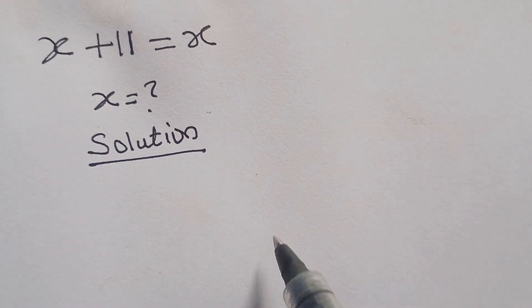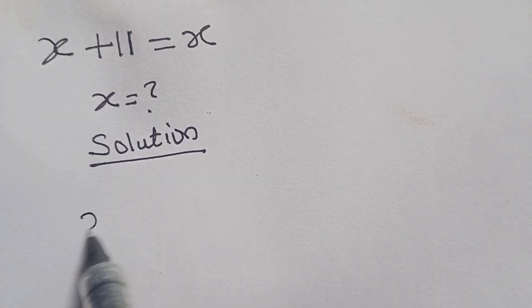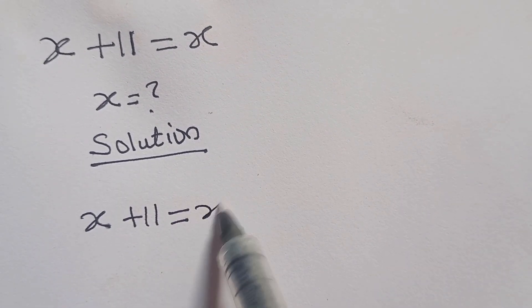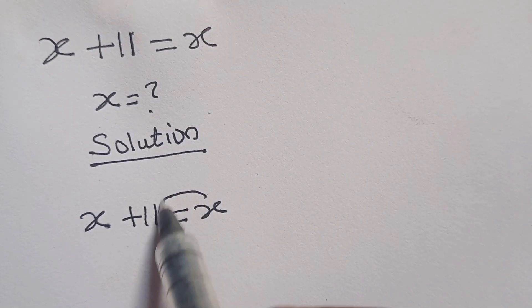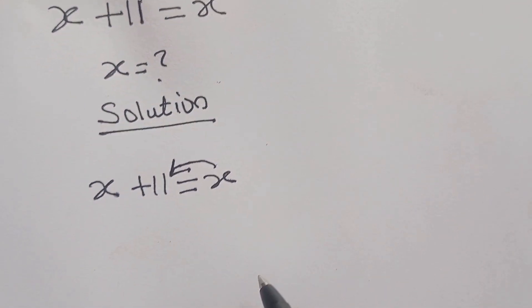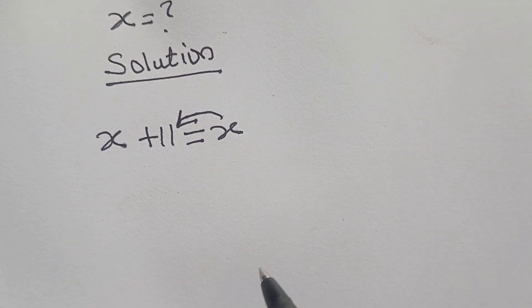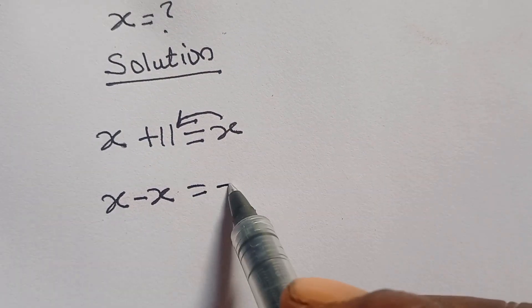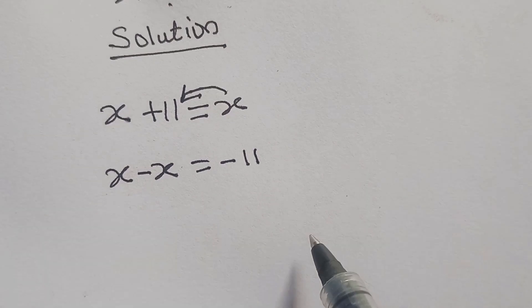Let's rewrite our question. I have x plus 11 to be equal to x. If you take the x that I have on my right hand side to the left hand side, I will be having x plus x minus x. It will not be equal to minus 11.